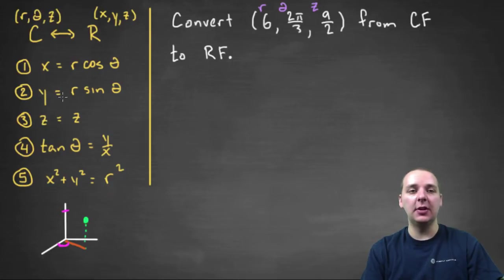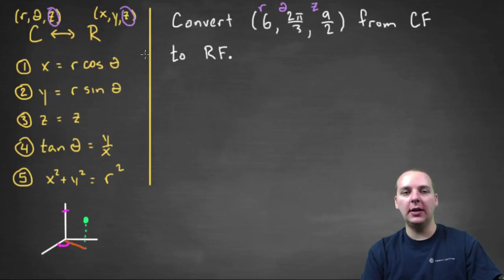The Z is actually immediate because Z in cylindrical form and rectangular form is the same Z. So this is finished. All we really have to do is convert R and theta to X and Y and we'll be done.